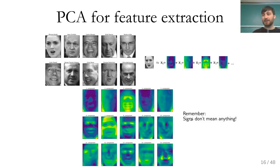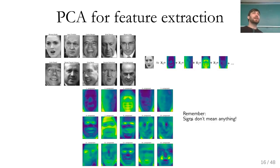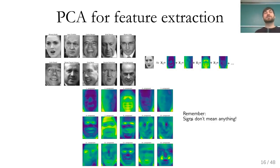One thing with PCA directions: the sign doesn't mean anything. Only the direction matters. If you look at the Gaussian and say the direction of maximum variance is this way, you can also say it's the opposite — there's no distinction. Eigenvalues don't have a sign: whether you pick v or minus v as the eigenvector is arbitrary. So whenever you see coefficients of principal components, never interpret which ones are positive and which are negative, because it's equally valid to take the negative of everything.